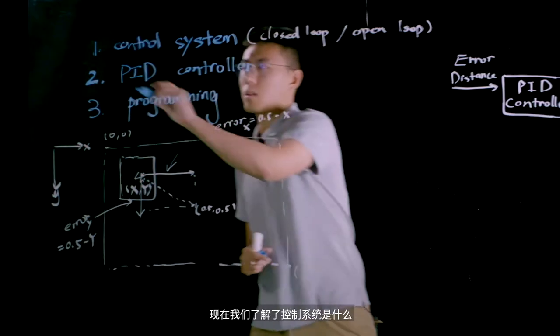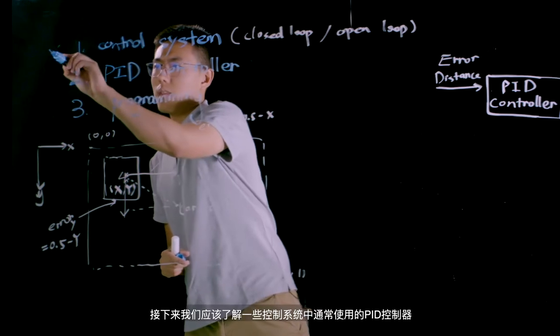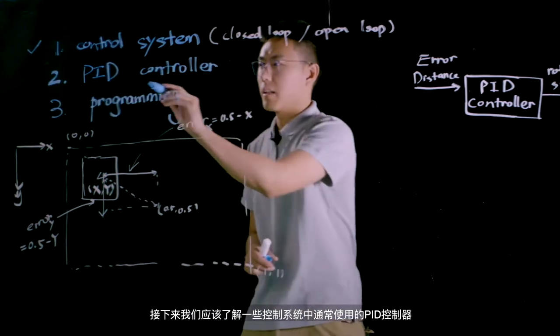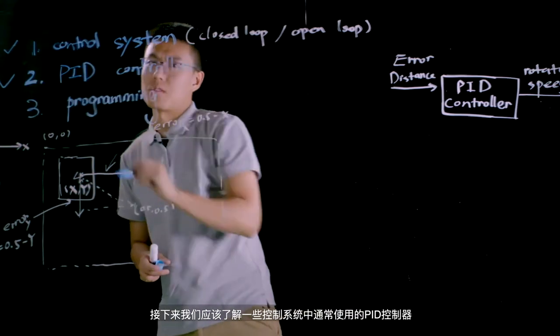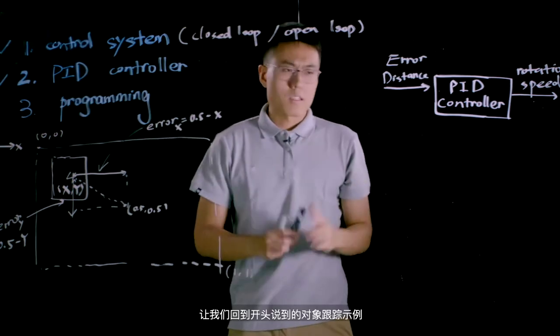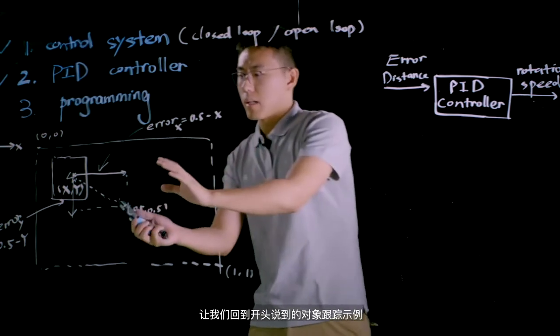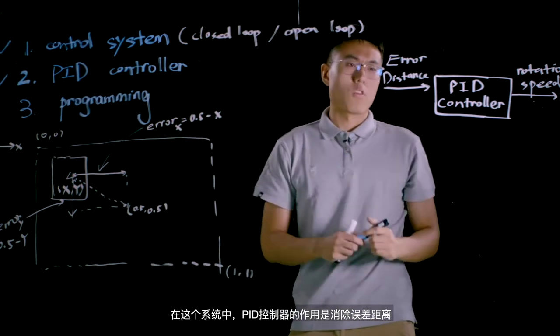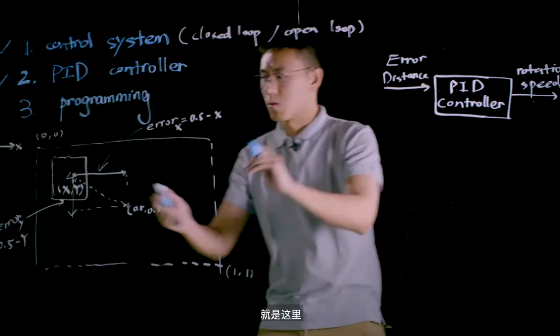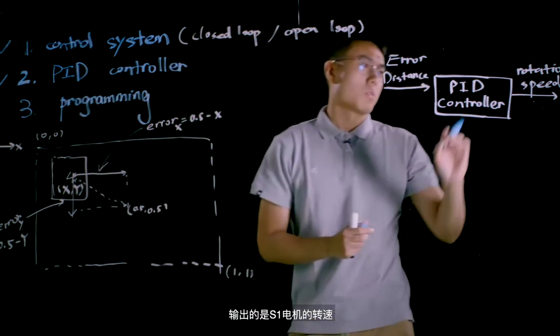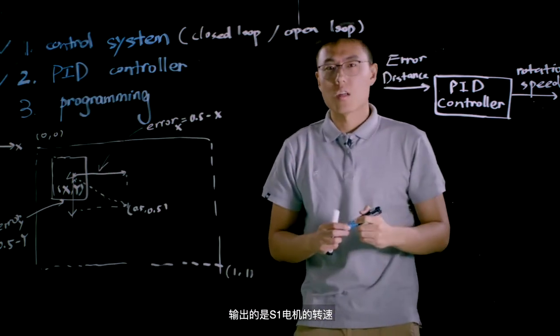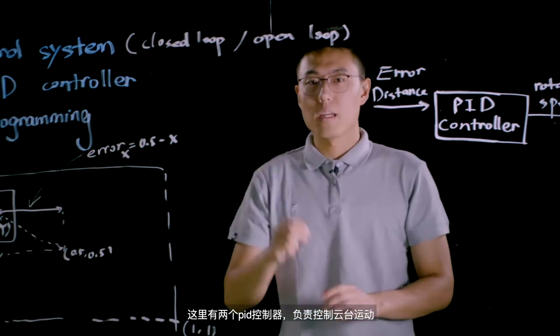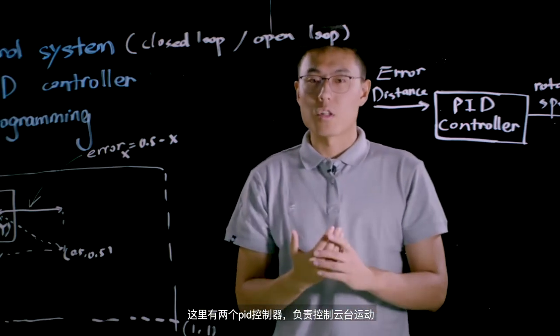Now we understand what the control system is, and next we should learn something about the PID controller normally used in the control system. Let's go back to the object tracking example at the very beginning. The PID controller used in this system is responsible for eliminating the error distance, which is over here, and output the rotational speed of motors of S1.